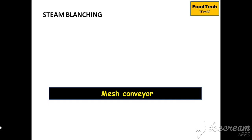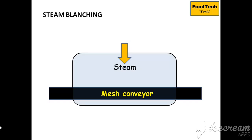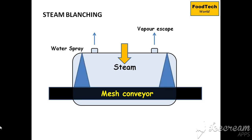In steam blanching, a mesh conveyor carries food from the inlet to the outlet. This conveyor is enclosed in a tunnel or chamber with a steam atmosphere. Nozzles on top of the chamber release steam vapors, and water sprays are used at the inlet and outlet points. The food product enters at the inlet, is carried by the conveyor, exposed first to a water spray, then to steam, and finally to a second water spray at the outlet.